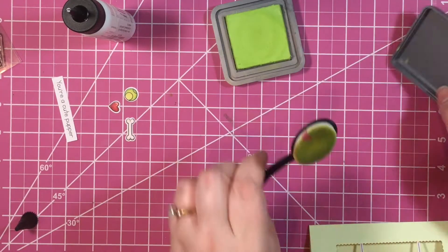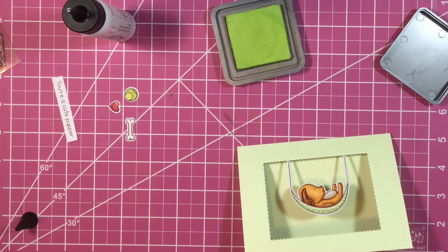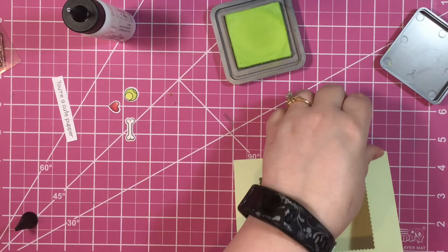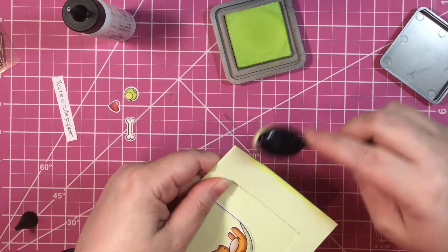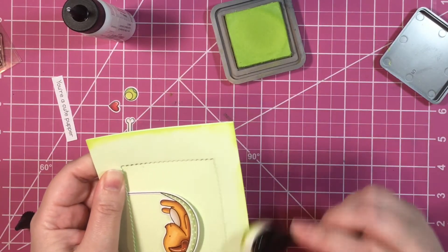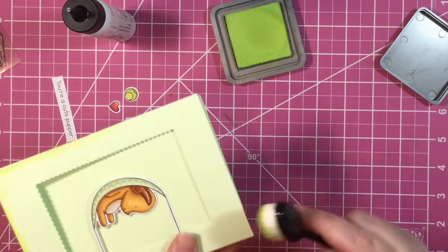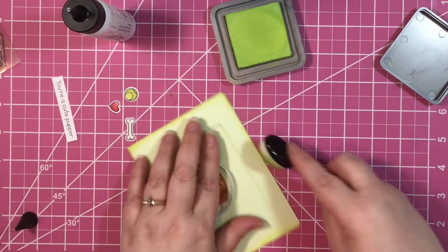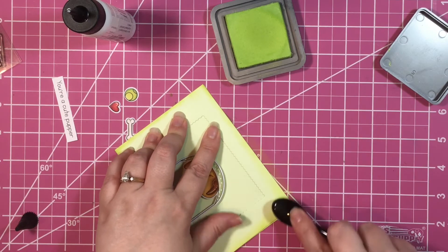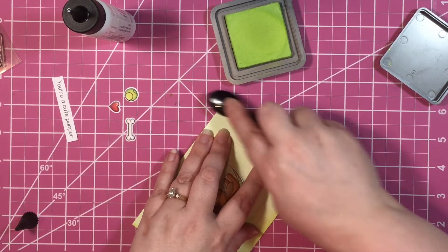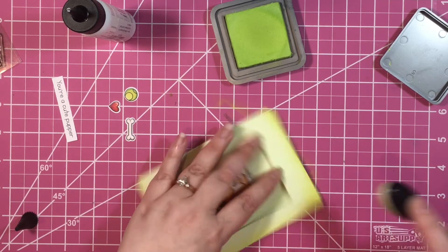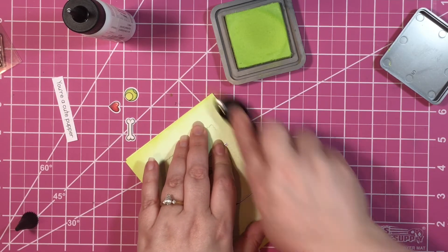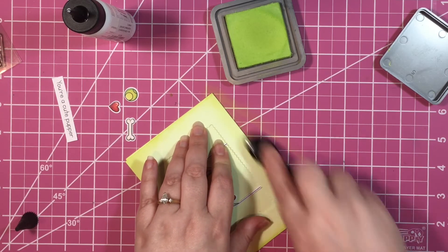I'm going to add some shadowing around the card with the distress oxide ink. I'm just using a makeup brush that I had purchased off of Amazon and I just go around the edges to give it a little bit of shadowing and color. Then when I'm done with that, I'm going to glue on my sentiment and the little bone and ball and heart.